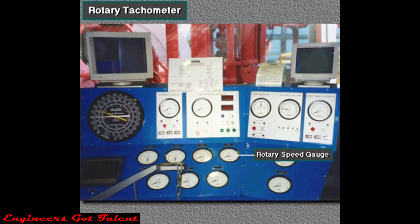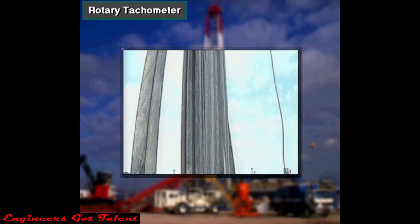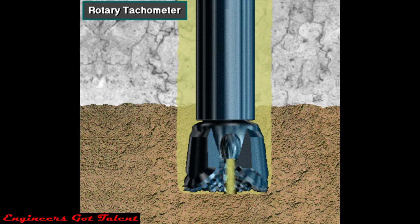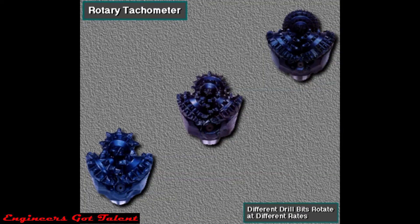The rotary tachometer shows the revolutions per minute, or RPM, of the rotary table or top drive unit. Drillers monitor rotary RPM because they need to know the rate the bit is turning. Different bits rotate at different RPMs, and RPM ranges for a bit are specified by the manufacturer.